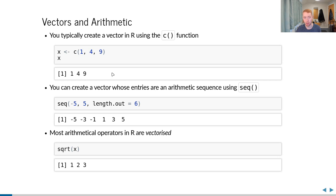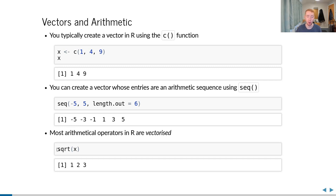Another way to create vectors is using the seq() function, which lets you create a sequence either increasing by a certain number or with a certain target length. Importantly, R and its mathematical operations are vectorized. So if you have a vector like 1, 4, 9 and take the square root, R calculates the square root of every individual element. Similarly, adding two vectors adds them element-wise. You can experiment with adding vectors of different lengths to see what behavior results.